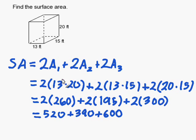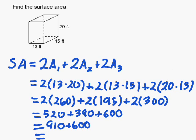First I did the parentheses each time, then I multiplied. Now all I have to do is add. So I get nine hundred ten plus six hundred, which gives one thousand five hundred ten feet squared. Remember, this is a surface area, so you must put the units in the squared term. And that completes our problem.